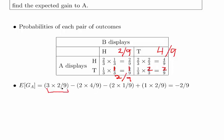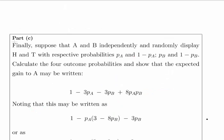So 3 times 2 over 9, minus 2 times 4 over 9, minus 2 times 1 over 9, plus 1 times 2 over 9. That gives us minus 2 over 9. So in the long run, this strategy does not favour A at all. The expected gain for B, therefore, is 2 over 9. So this whole setup definitely suits B, player B.